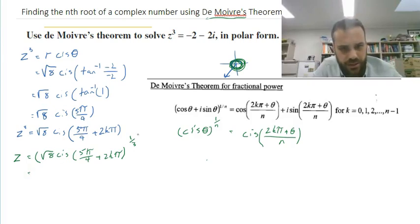Alright, so if we do that, we've got root 8 to the power of 1 third. That's 2. And then we have cis, 5 pi on 4, plus 2k pi. And we need to divide both of those things by 3. So if I divide both of those things by 3, it'll be 2k pi divided by 3, and it'll be 5 pi divided by 4 times 3, 12.